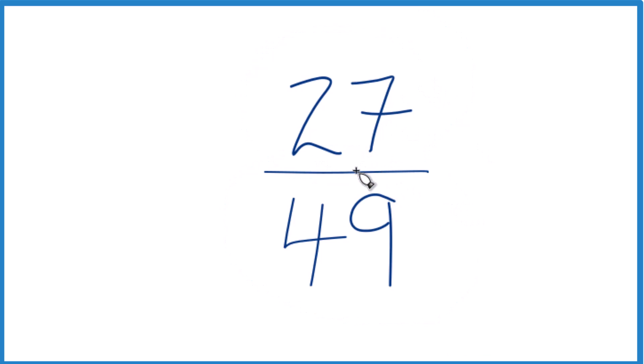So we want to find another fraction that's equivalent to 27 over 49. It has the same value, it's just that we reduced it to lowest terms. So we need to find a common factor for 27 and 49, and then we'll figure out the simplest form for the fraction.